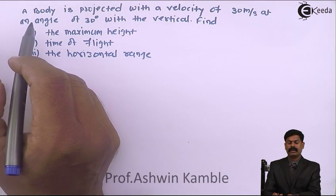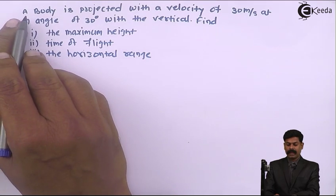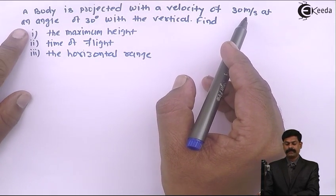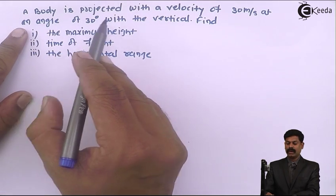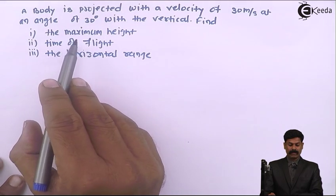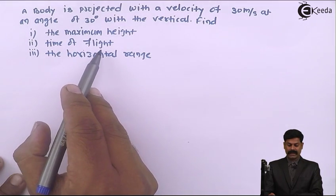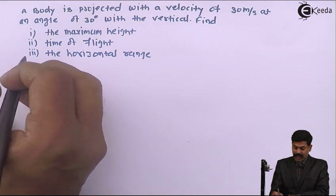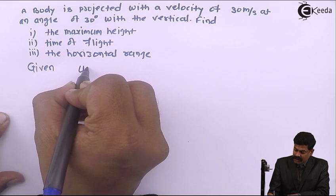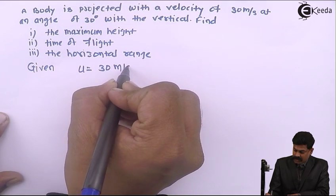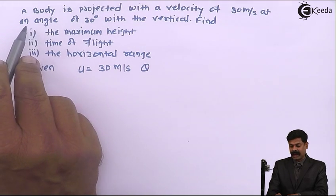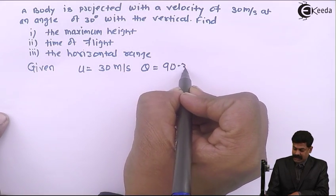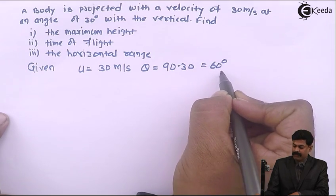The first example on projectile motion: a body is projected with velocity of 30 meter per second at an angle of 30 degree with the vertical. Given: velocity is 30 meter per second, theta is 30 degree with vertical, which means theta equals 90 minus 30, that is equal to 60 degree with the horizontal.